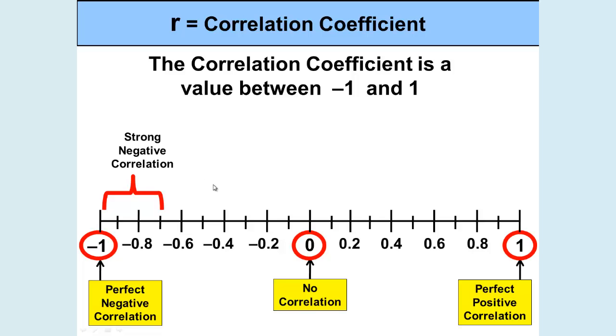If it falls toward the negative 1 at the lower end of our range, it will be considered a strong negative correlation. These are not exact numbers, but a general trend.